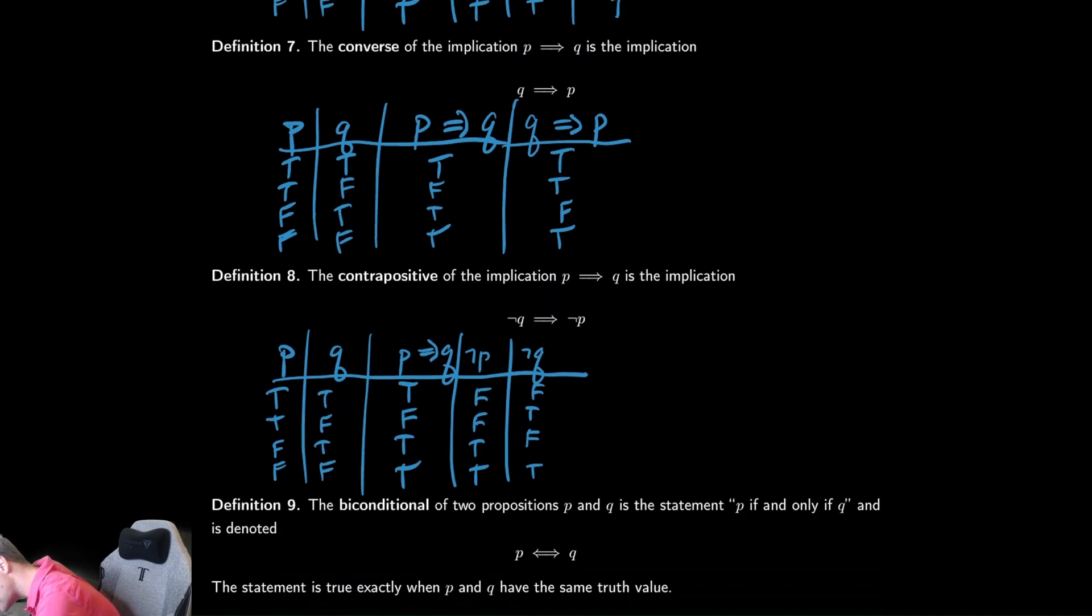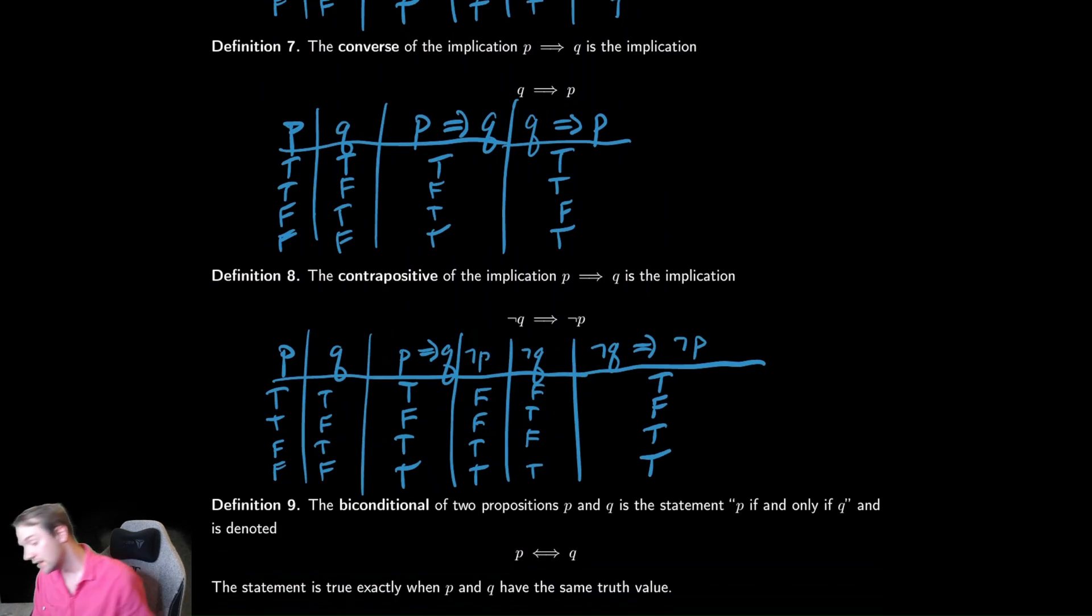And then we want to make a column for the contrapositive, which is not q implies not p. And we're looking for the entry where we have a true hypothesis and a false conclusion. That occurs in the second row, and then everywhere else this is true. And in this case, this is actually identical to the p implies q column.